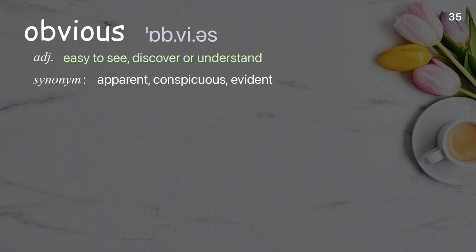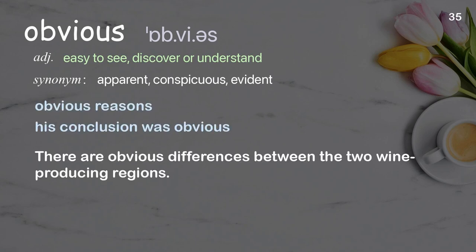Obvious: easy to see, discover, or understand. Examples: obvious reasons, his conclusion was obvious. There are obvious differences between the two wine-producing regions.